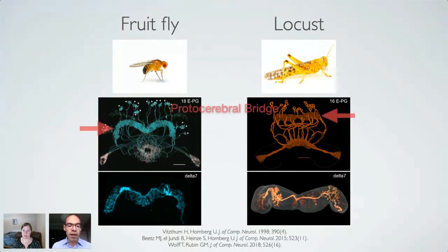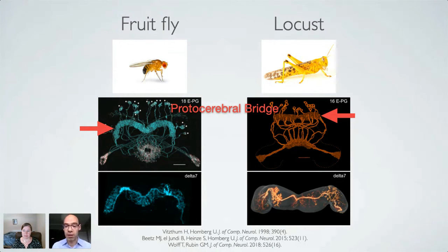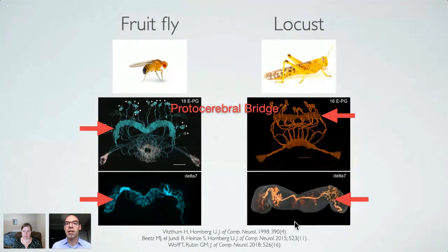Second, the protocerebral bridge in the fruit fly consists of 18 segments and 18 corresponding columns of neurons that interconnect the protocerebral bridge with the ellipsoid body. In contrast, in the locust, the protocerebral bridge has 16 segments and corresponding groups of neurons. Third, the delta-7 neurons that run along the length of the protocerebral bridge differ in their arborization pattern. In the fruit fly, they have dendritic terminals all along their length, while in locusts they only have dendrites in specific portions along the neurite, with gaps in between.